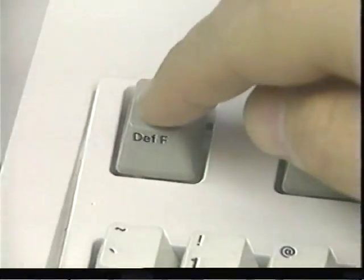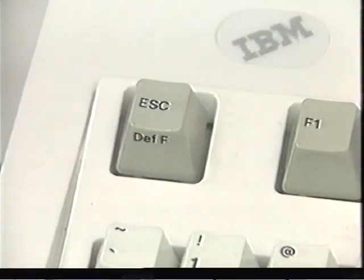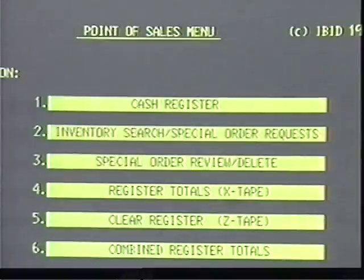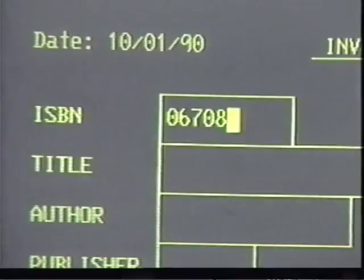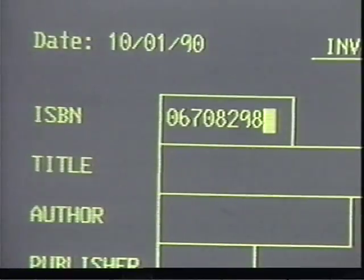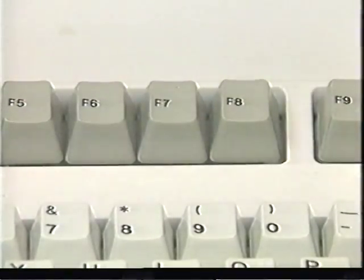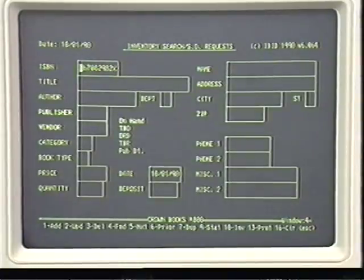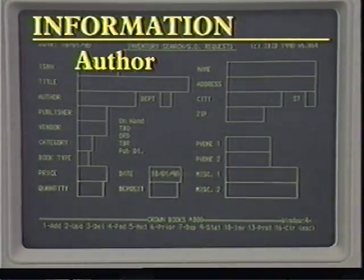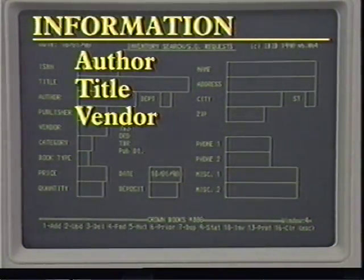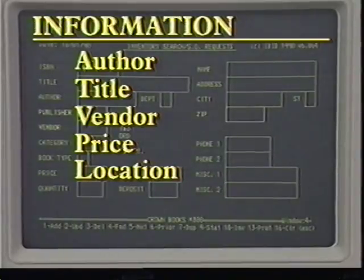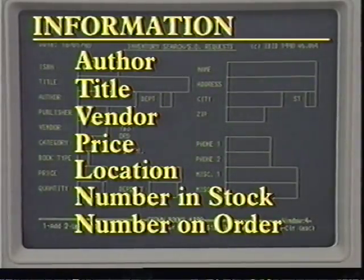Before we conclude, let's look at the inventory search function. If you're in the cash register mode, press escape to get to the point of sales menu, then select inventory search by pressing the F2 key. If you have the ISBN number, type in the number and press the F7 key. The computer provides you with information on the book such as author, title, vendor, price, location, number in stock, number on order, and more.